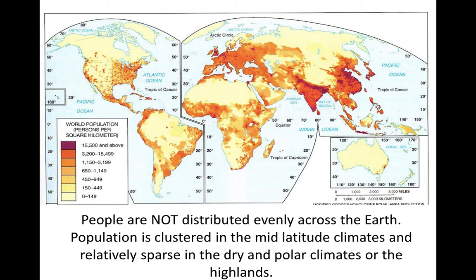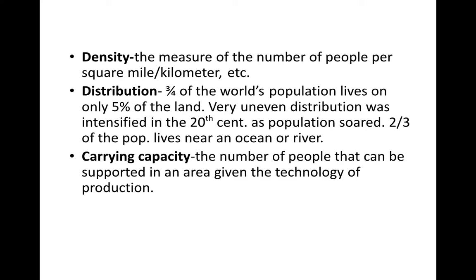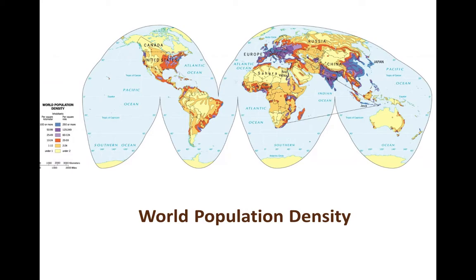Population is clustered in the mid-latitude climates and is relatively sparse in dry and polar climates and in the highlands. When we talk about demographics, we talk about density — how many people per square mile or per square kilometer — distribution, how population is spread across the planet, and carrying capacity — how many people can survive in an area given the technology of production.